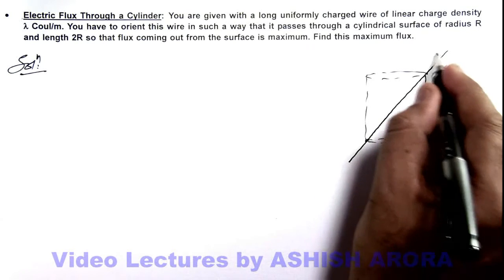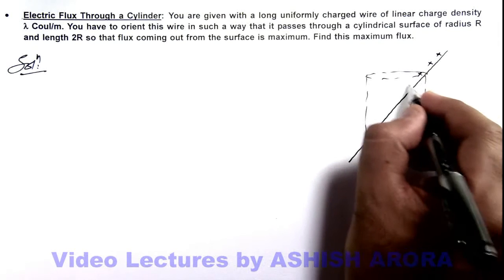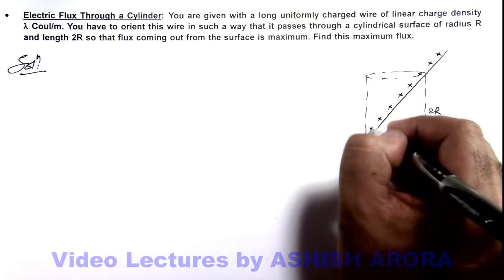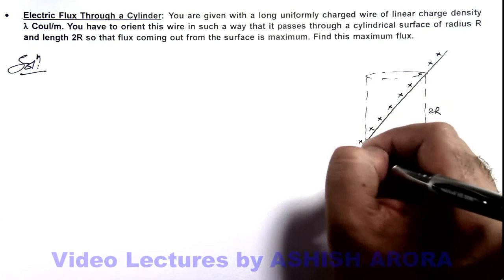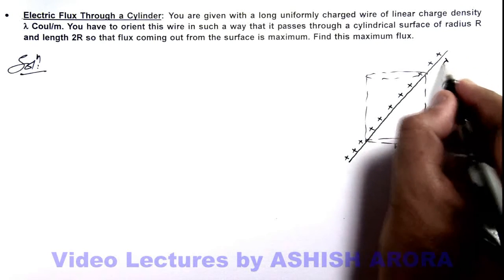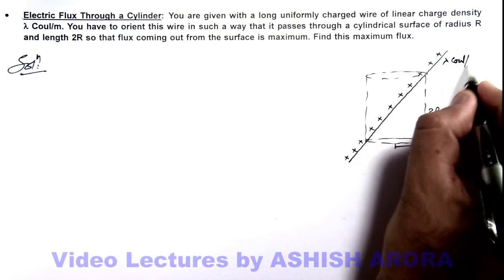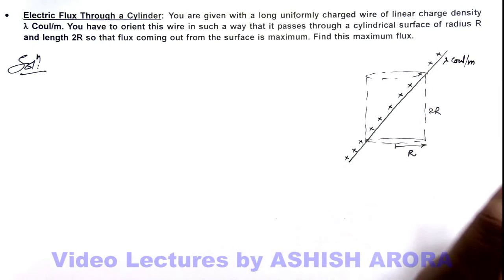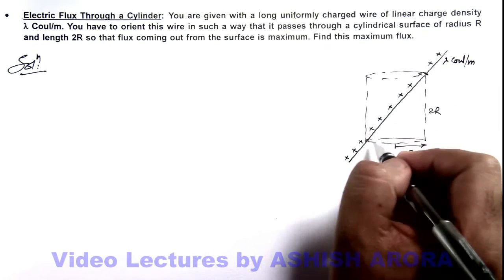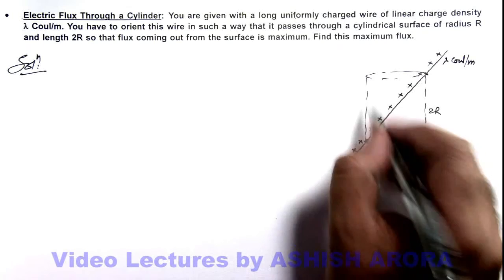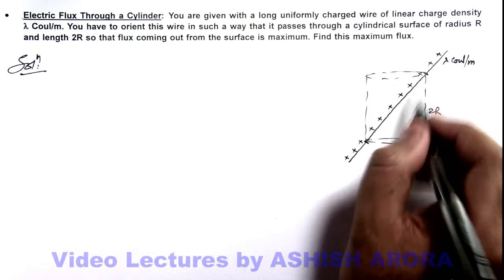So that you can see this is the situation when maximum length of wire is enclosed in the cylinder. So if it is of linear charge density lambda coulomb per meter, then the length which is contained within this cylindrical surface can be given by Pythagoras.